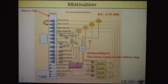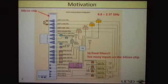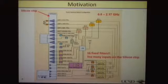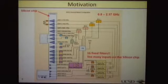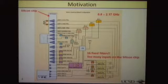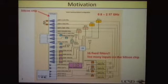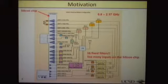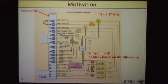Let's talk about the motivation and why we need the tunable bandpass filter. This slide shows the wireless mobile module from the iPhone, covering from 0.8 to 2.17 GHz. In this figure you can find they have 16 fixed filters and diplexers in this system. That would result in the silicon chip having too many inputs, and the filters and diplexers are implemented by surface acoustic wave and bulk acoustic wave, which usually cost a lot of money. This is why we need to integrate all these filters into a single chip.